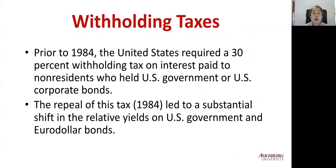Before 1984, the US required a 30 percent withholding tax on interest paid to non-residents who held US government or US corporate bonds. This law was repealed in 1984, and this repeal led to a substantial shift in the relative yields on US government payments and eurodollar bonds. Prior to 1984, top-quality eurodollar bonds traded at lower yields than US Treasury bonds of similar maturity. Afterward, the situation reversed, as foreign investors found the safety of registered US Treasury bonds — now without the withholding tax — more attractive than the higher yields on corporate eurodollar bonds.